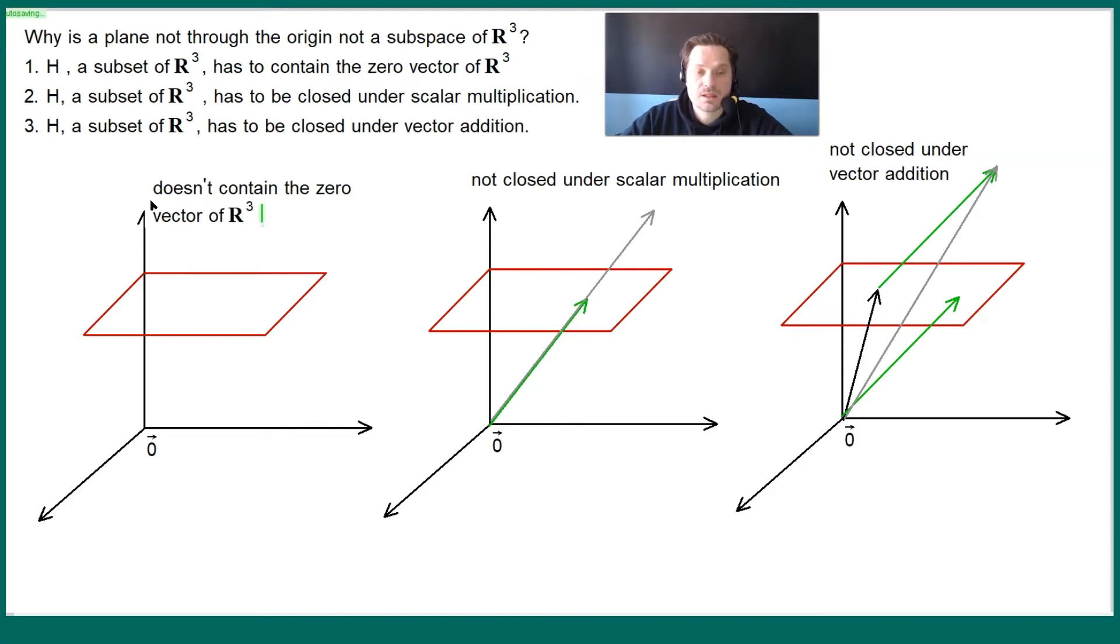So, this is showing us how a plane, in other words, a subset of R³, fails each of the conditions. Therefore, you would say that when a plane is not through the origin, it's not a subspace of R³.